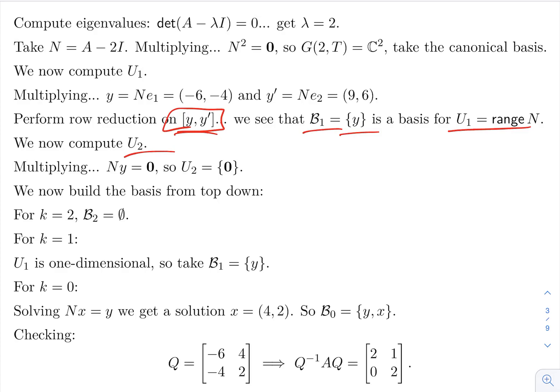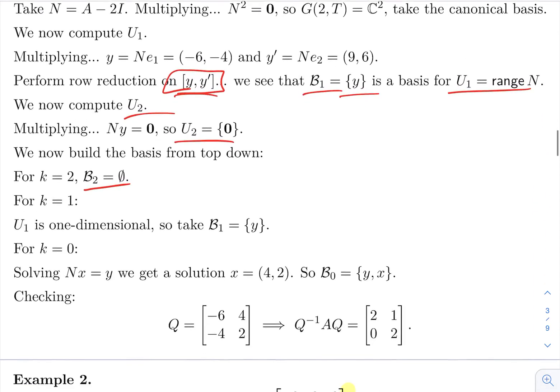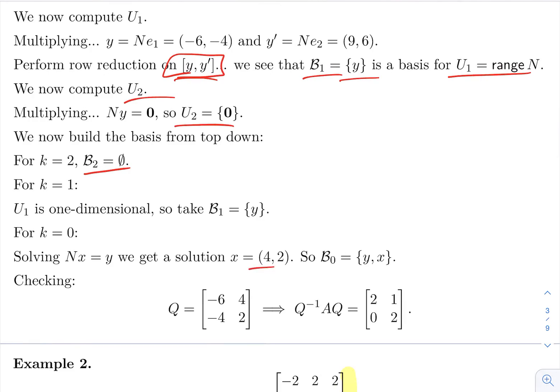You start with some trivial spaces, empty set, and you increase that, and it keeps going until in the end you find the basis, which is different from the previous one. But nevertheless, it's also a Jordan basis, and it works.